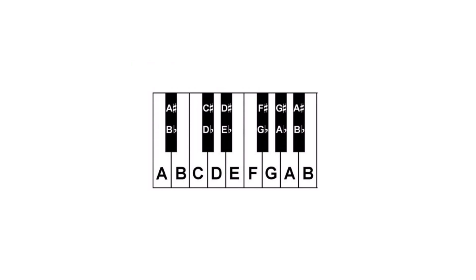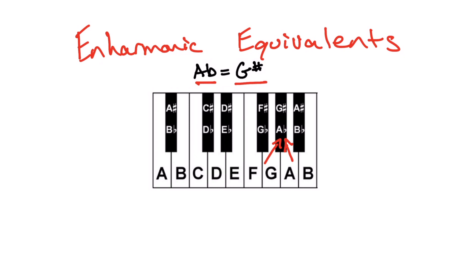Well, we've talked in previous videos about something in music called an enharmonic equivalent. Enharmonic equivalents occur when we have something like an A flat being the same thing as a G sharp. If you look on the piano, you'll see that G sharp is a half step above G and A flat is a half step below A. And so A flat and G sharp are the same note.